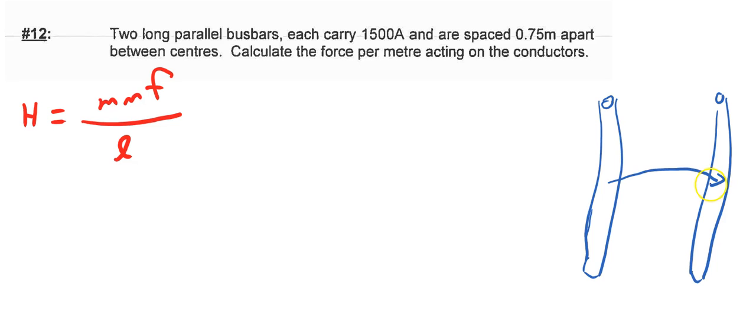But then the magnetism produced by the current in one conductor will basically form circles around the conductor. And so the length becomes the length of this circle here.